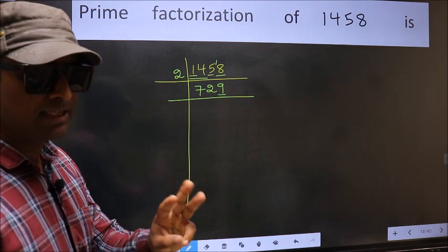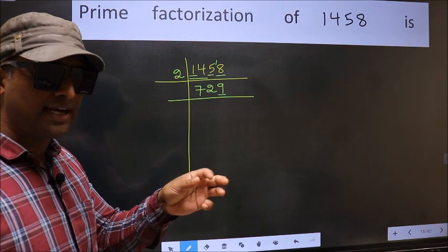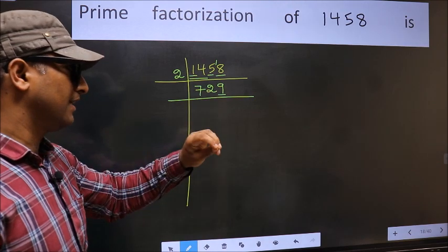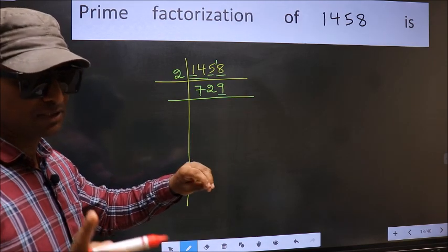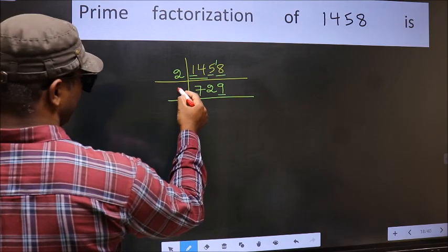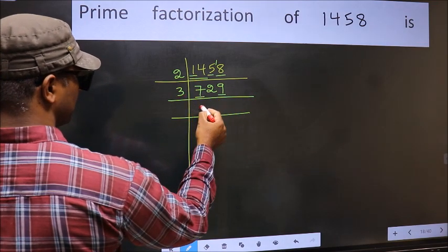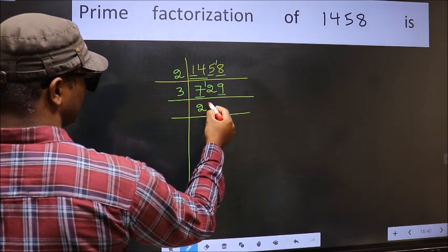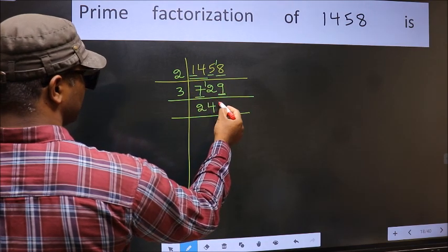Next prime number is 3. To check divisibility by 3, we should add the digits: 7 plus 2 plus 9, we get 18. 18 is divisible by 3, so this number is also divisible by 3. Take 3 here. First number 7 — a number close to 7 in the 3 table is 3 twos 6. 7 minus 6 is 1, 1 carried forward giving 12. When do we get 12 in the 3 table? 3 fours 12. The other number is 9. When do we get 9 in the 3 table? 3 threes 9.